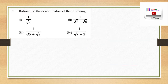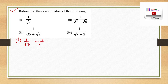Question 5: Rationalize the denominator of the following. Part 1: 1/√7. To rationalize, multiply numerator and denominator by √7. It becomes √7 upon √7 × √7 = √7/7.